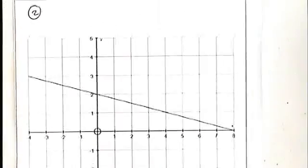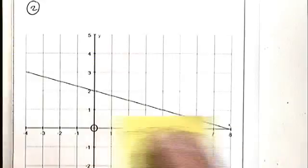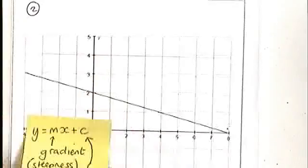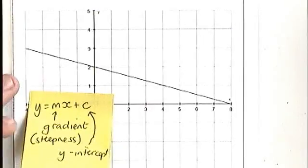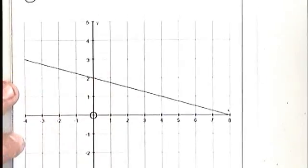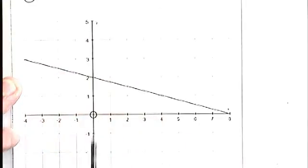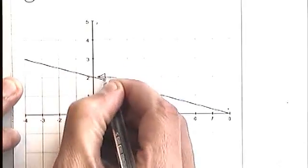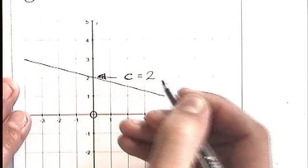Let's have a look at a second example now, just very quickly. This one. Once again, we're going to go through the same steps. We're going to try to work out the value of c, which is the y-intercept, and the value of m, which is the gradient. So the value of c is where your line crosses the y-axis, which is here. So we can say that the value of c is equal to two.